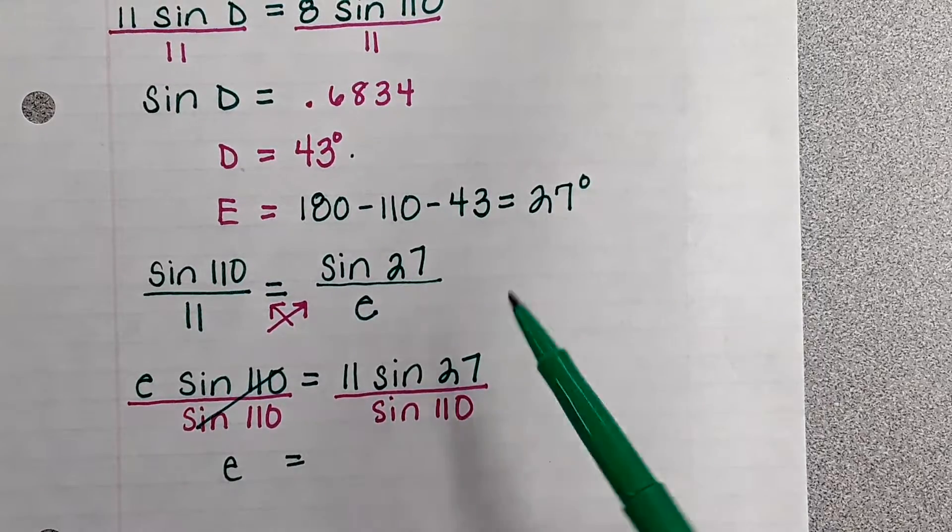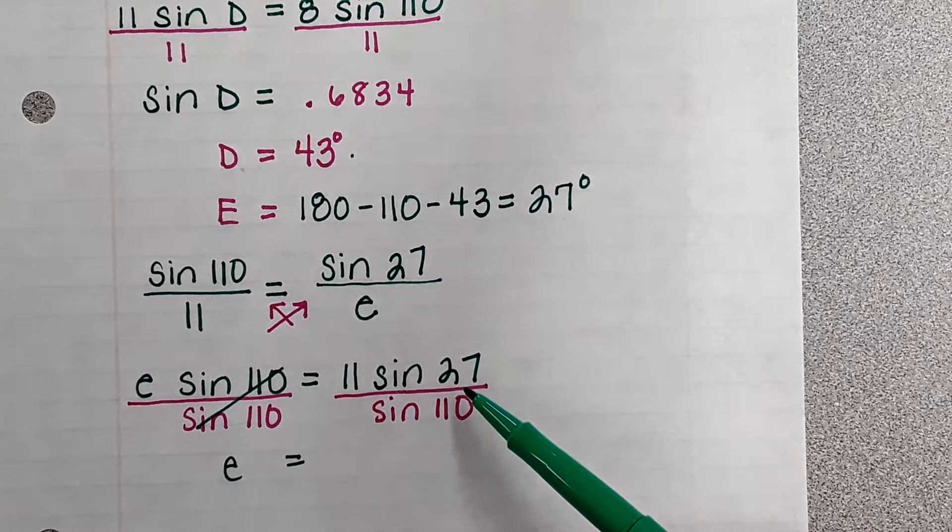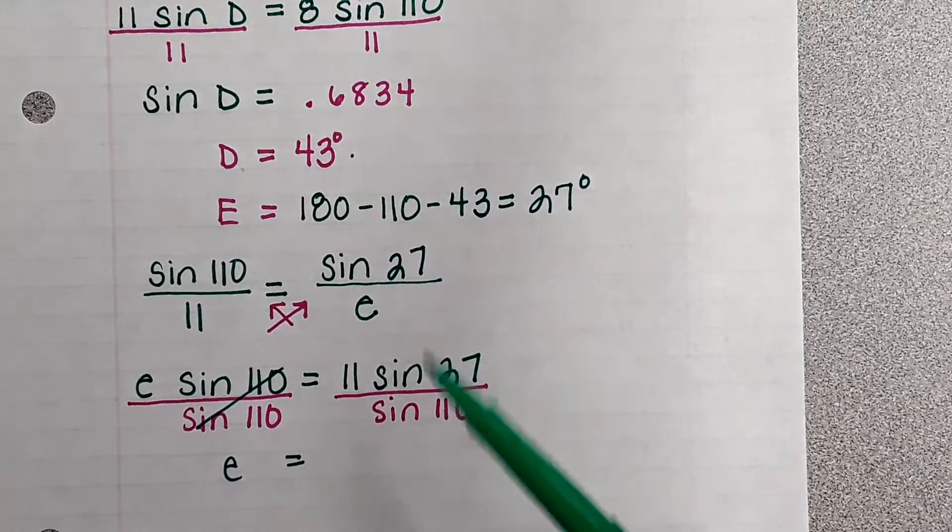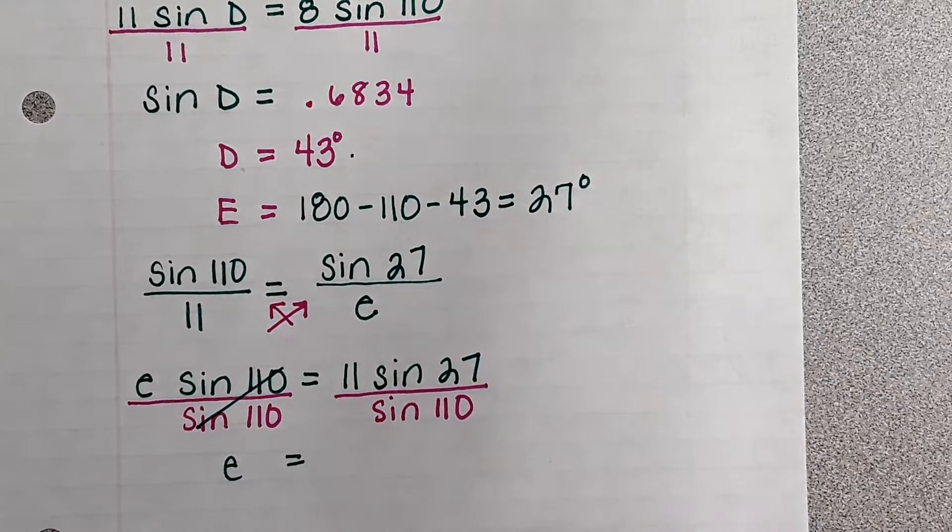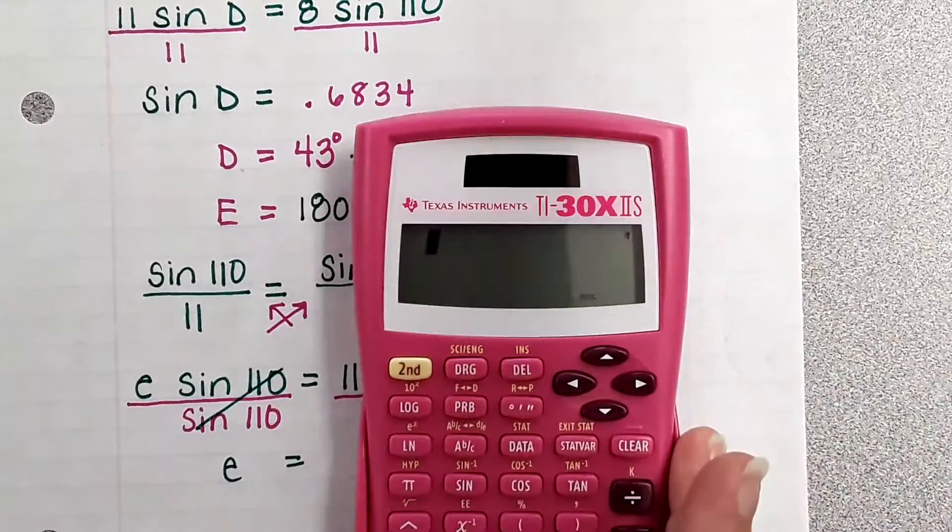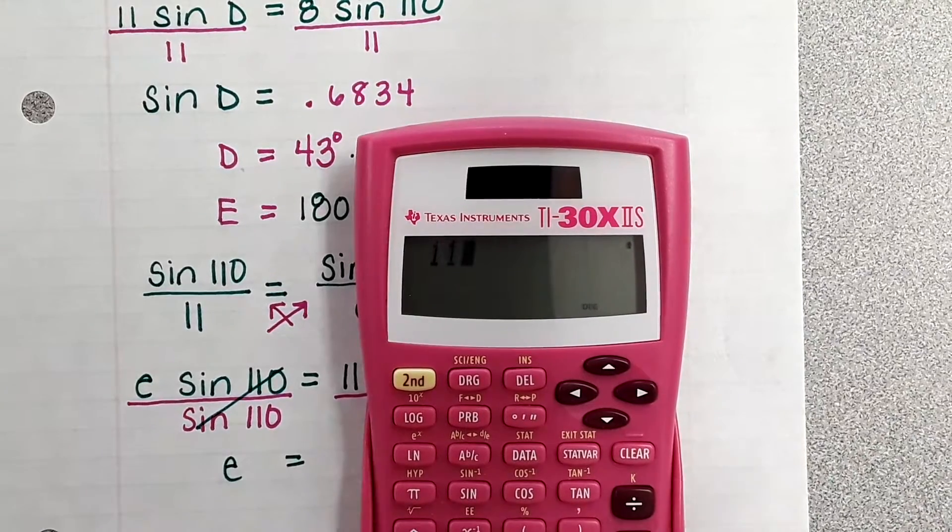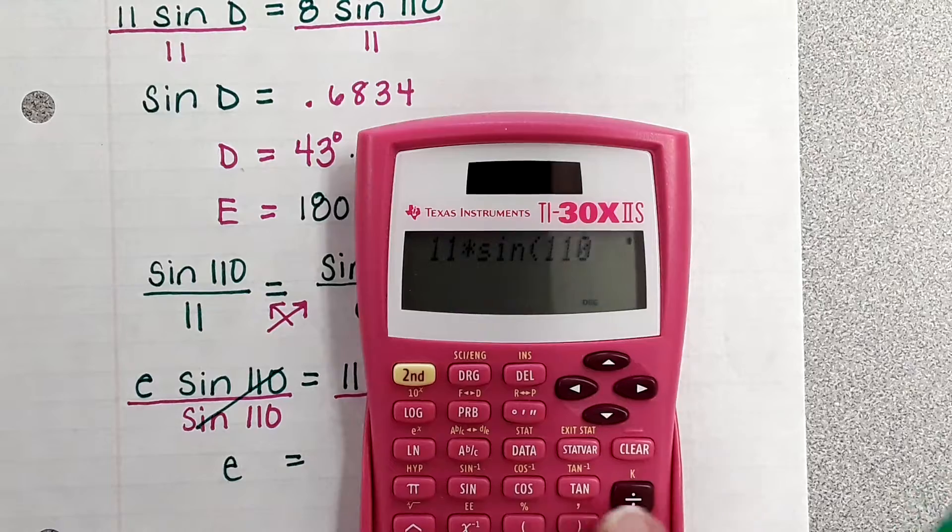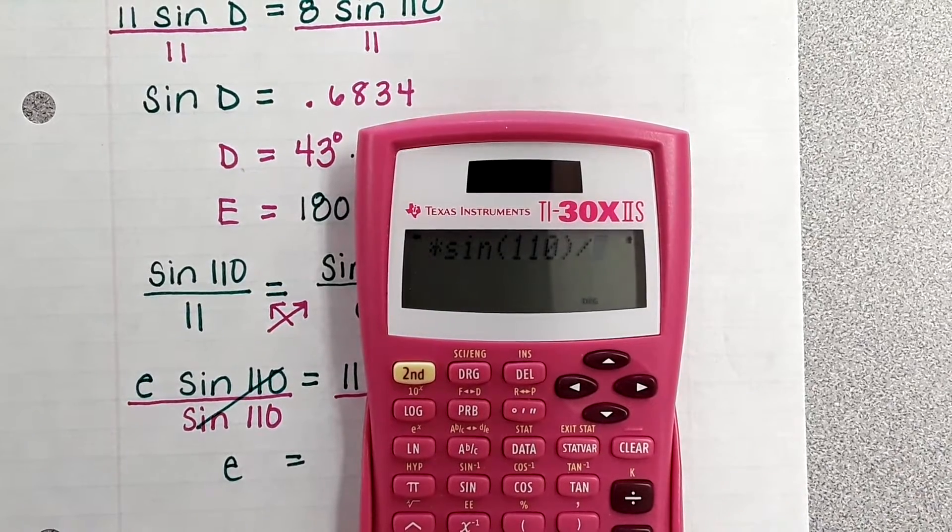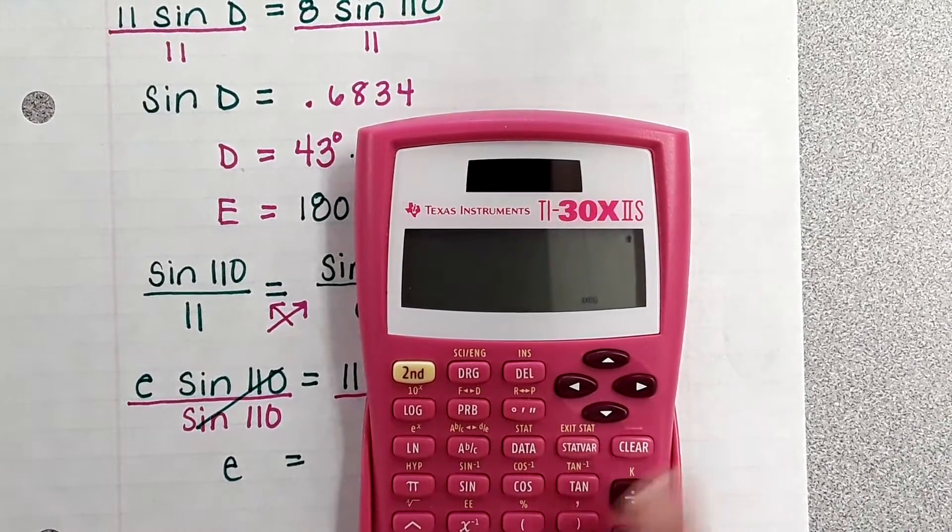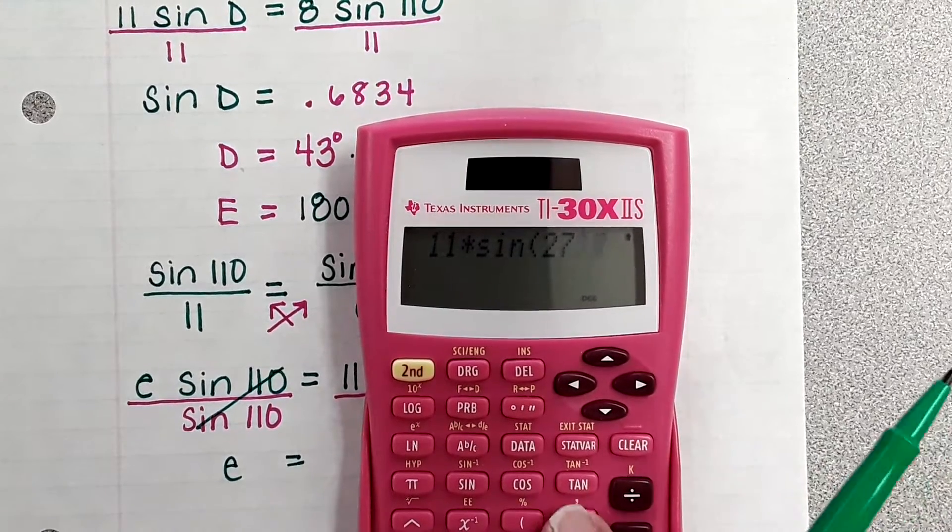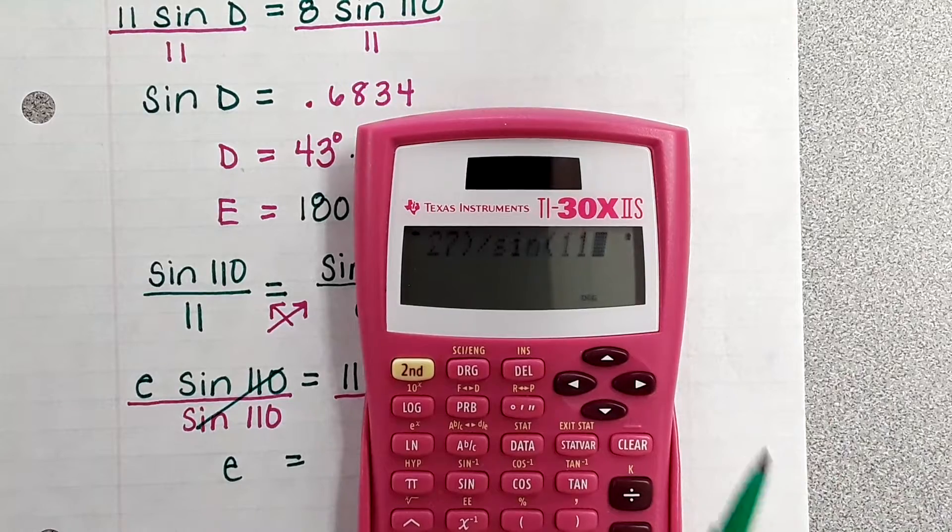Again, because the sine has a number after it, there's not a letter, no second sine is necessary. We're just going to do 11 sine 27 divided by sine of 110. So 11 times sine of 27 divided by sine of 110.